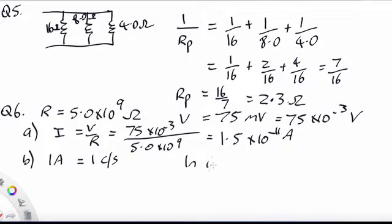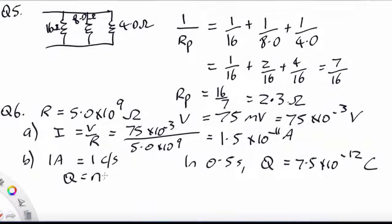So in 0.5 seconds, we're going to divide that by 2, the charge that flows will be 7.5 by 10 to the minus 12 coulombs. And going right back to our rule where the total charge is the number of particles times the charge on each one, and in this case, each of these ions has a charge of magnitude E.